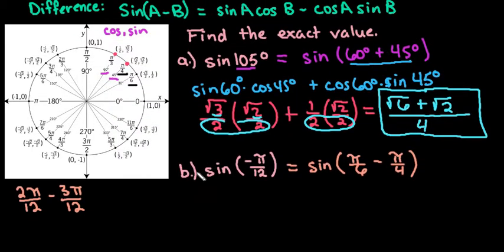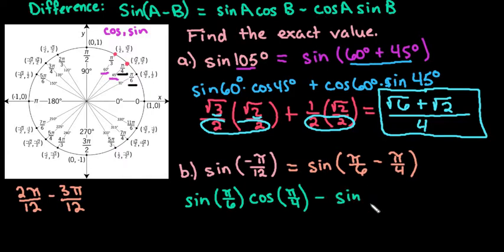let's first write it in the format that we need to. Sine a, my a term is pi over 6, so I'm going to use sine pi over 6 times cosine of my second angle, which is pi over 4. Because it's subtraction, it's the difference, I put the difference in between. And then I would use sine pi over 6, I mean pi over 4.